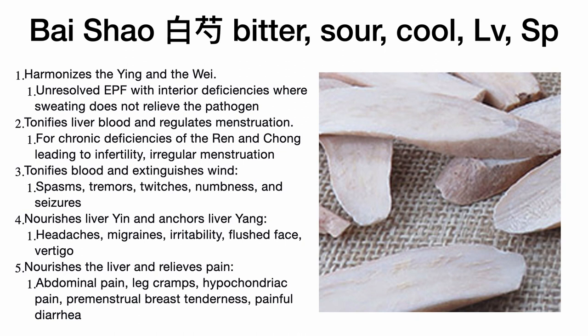Bai Shao is a bitter, sour herb that is cool and enters the spleen and liver channels. In this formula, we use it to harmonize the ying-nutritive and wei-protective levels of energy, treating unresolved external pathogenic factors with interior deficiencies where sweating does not relieve the pathogen. Bai Shao also tonifies liver blood and regulates menstruation, and we use it for chronic deficiencies of the Ren and Chong vessels leading to infertility and irregular menstruation.